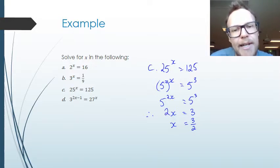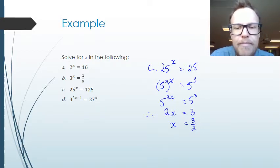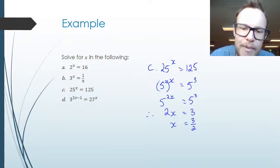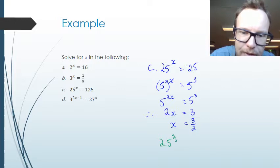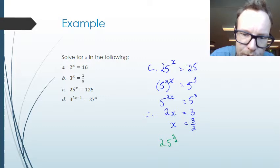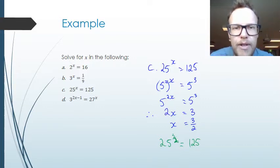We can check our answer by substituting the value back into the original equation. If we substitute 25 to the power of 3 over 2 into a calculator, we would see that the calculator gives us 125 as the solution, confirming our answer is correct.